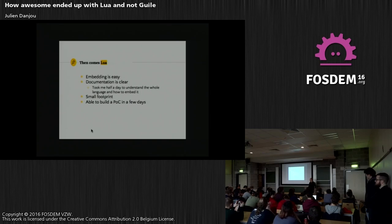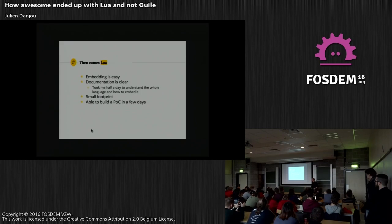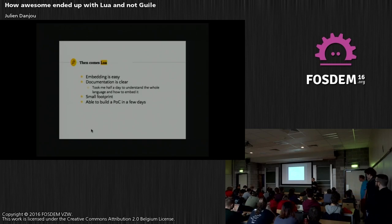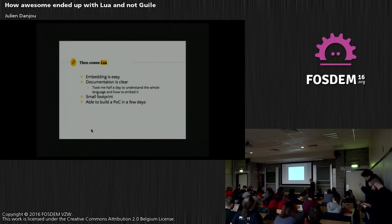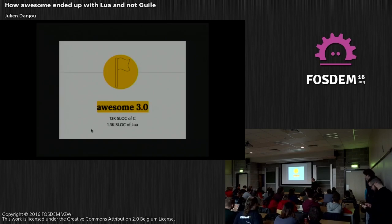Lua, on the other hand, was super easy. I remember I read the entire manual in like a day, and a week later I had a proof of concept of Awesome doing things with Lua. I was able to add title bars with just two lines of Lua in my C program — very, very easy, very fast. It's a small footprint. The documentation is really good and actually explains how to embed Lua in a C program with examples. So for all three languages, documentation is super important if you want adoption to your project or programming language.